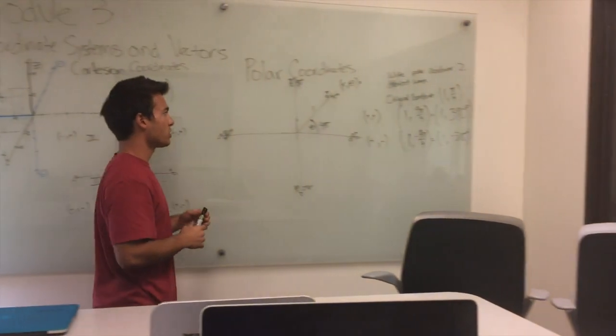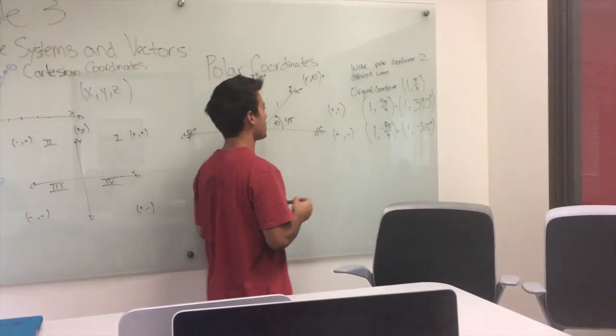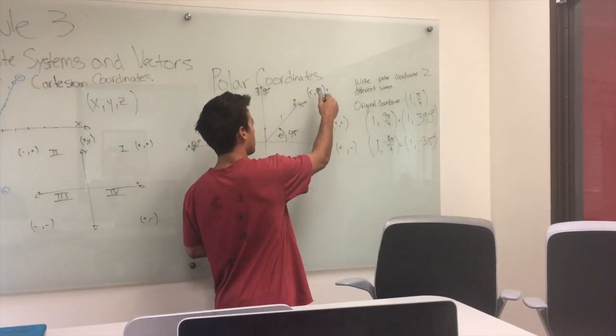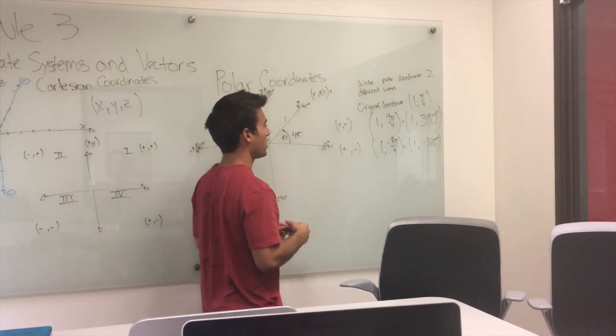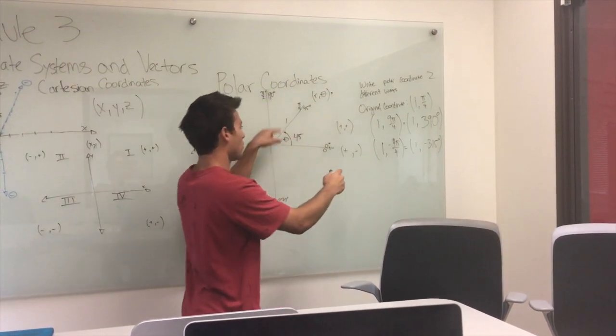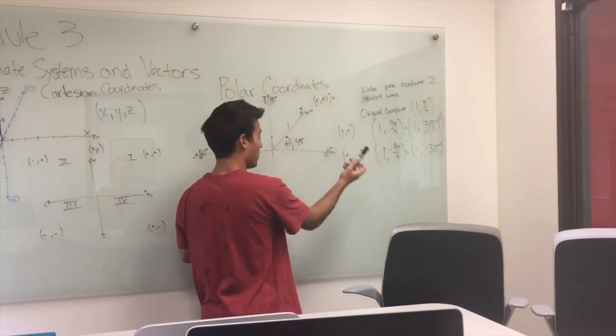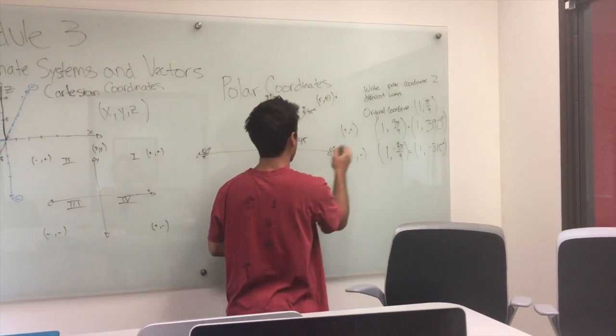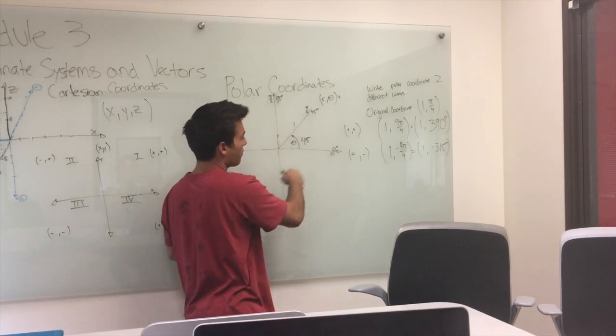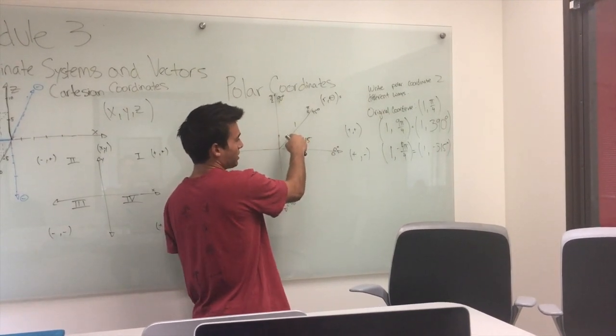We're also showing you the polar coordinates, which is displayed as length r and angle theta. So right here we have our point length 1 and 45 degrees, which can be displayed in many different ways. An example is 9 pi over 4, so we go 2 pi and we add another pi over 4 to get to the same place.